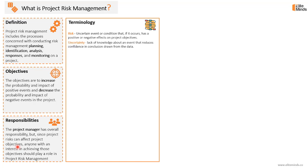What is uncertainty? When you are uncertain about something on the project, it means you have a lack of knowledge about an event or condition that reduces the confidence in conclusions drawn from the data. An opportunity is a positive set of events — a risk that, if it occurs, will have a positive impact on at least one of the project objectives. So a risk can be an opportunity, which is a positive set of events, or it can be a threat.